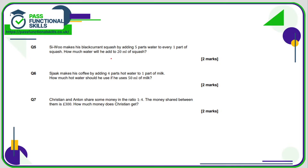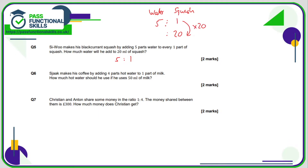Question 5: the ratio is 5 parts water to 1 part squash. He is using 20 ml of squash. To go from 1 to 20 we're multiplying by 20 — scaling the ratio up 20 times. So we need 20 times 5, which is 100, giving 100 millilitres of water.